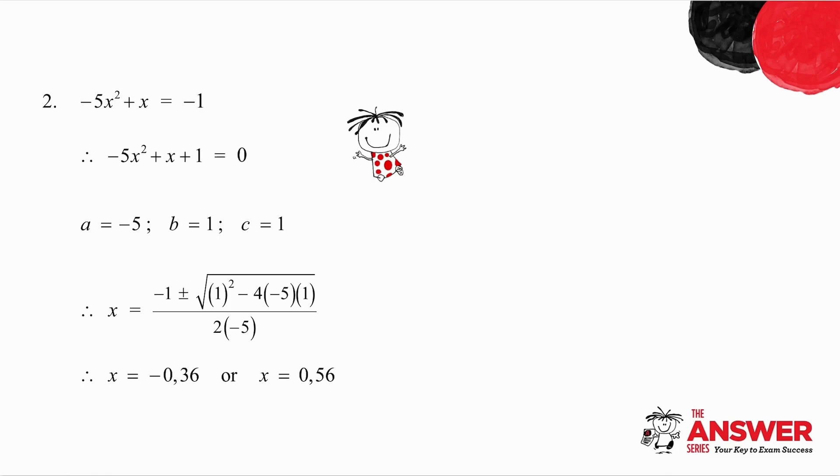In the second example the first thing you've got to do is you've got to put the quadratic into standard form. So you've got to take the minus 1 across to the other side and make it equal to 0. Your a value is minus 5, b is 1, the coefficient of x, and c is the constant, in other words 1.